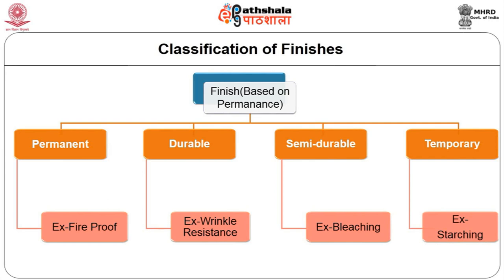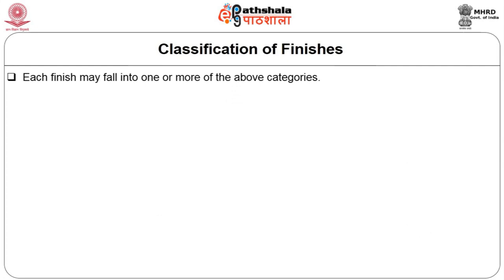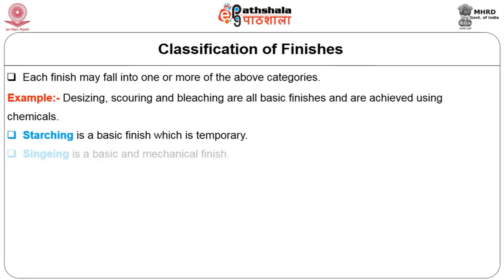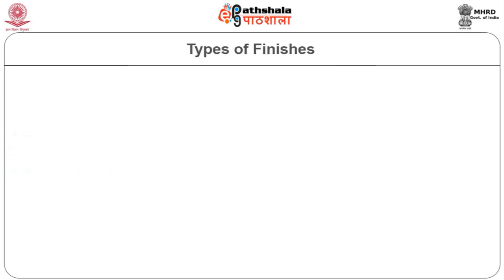Most temporary finishes can be reapplied at home. Each finish may fall into one or more of the above categories. For example, desizing, scouring and bleaching are all basic finishes achieved using chemicals. Starching is a basic finish which is temporary. Singeing is a basic and mechanical finish. Mercerization and plissé are special finishes applied using chemicals and are permanent.